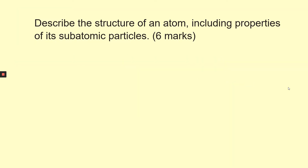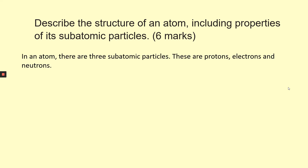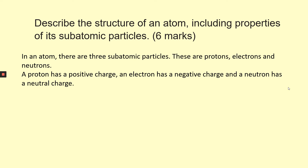Let's get back to the original question: describe the structure of an atom, including properties of its subatomic particles. First, let's state what the subatomic particles are. In an atom, there are three subatomic particles — these are protons, electrons, and neutrons. Now let's talk about their properties. Looking at charge: a proton has a positive charge, an electron has a negative charge, and a neutron has a neutral charge.